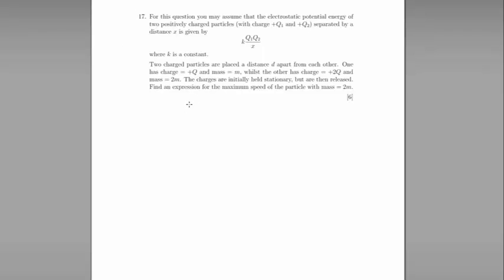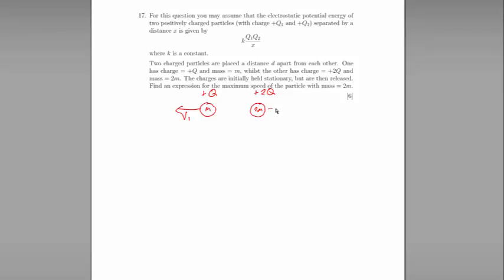So let's first of all draw a diagram to represent the problem here. So we have mass M and mass 2M. This one has a charge of plus Q and this one has a charge of plus 2Q. The first mass will move with the velocity, let's call that V1, and the second will move with the velocity V2.